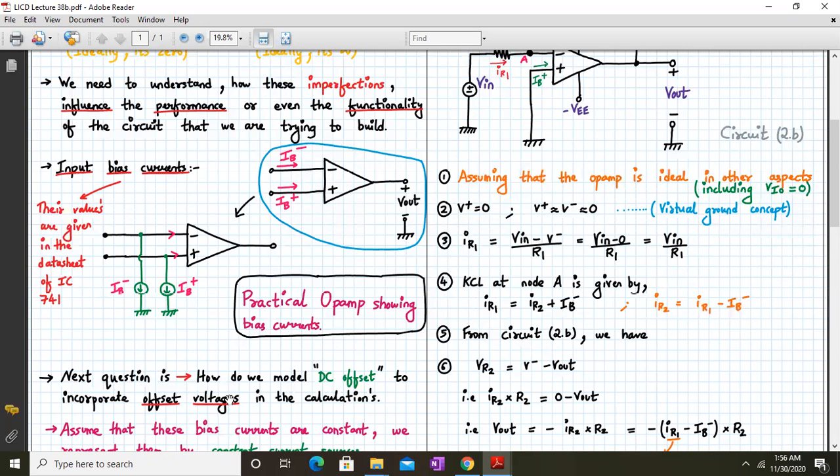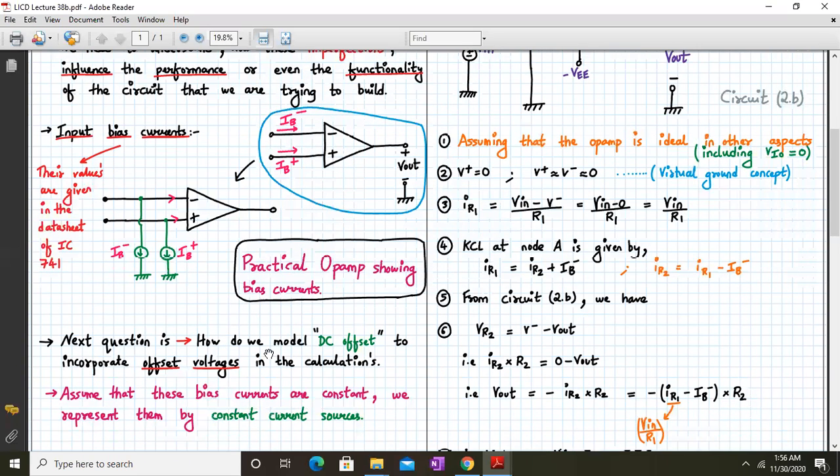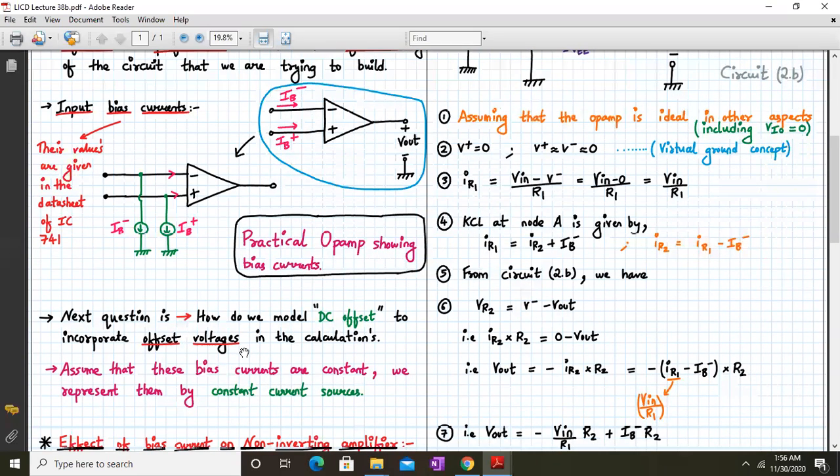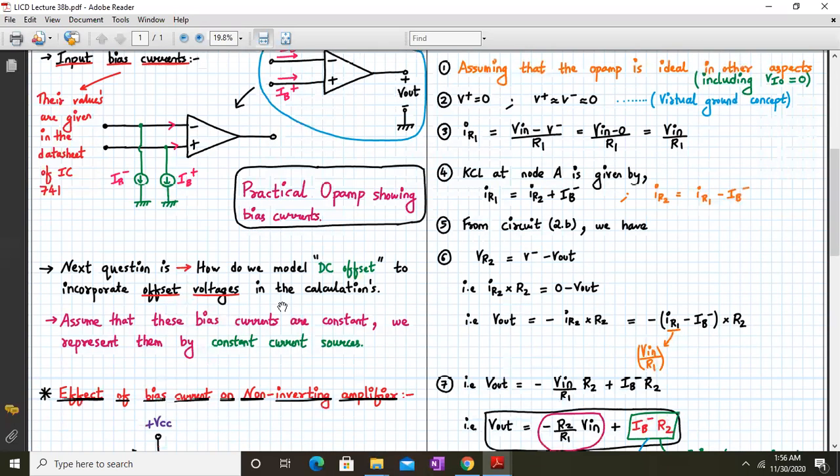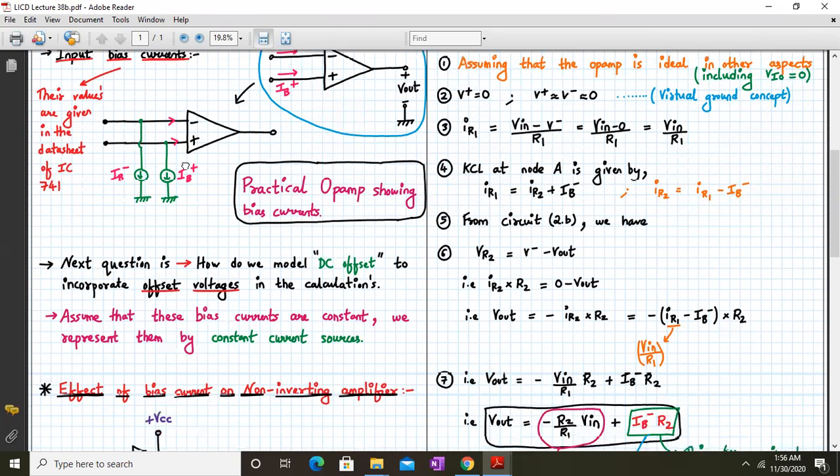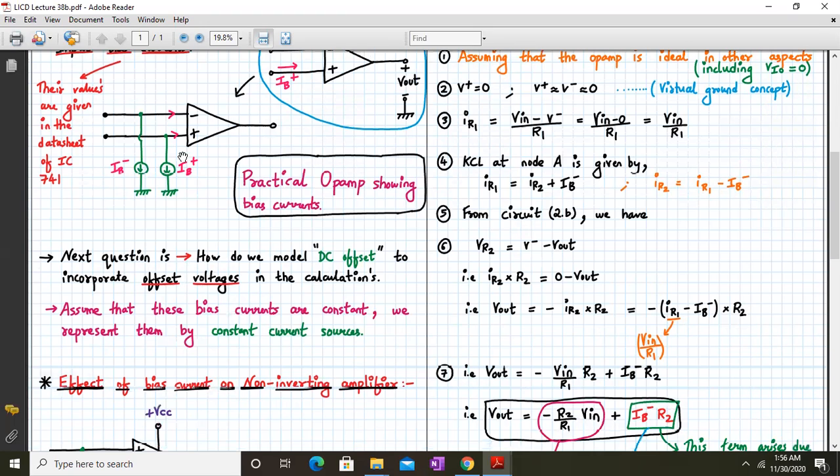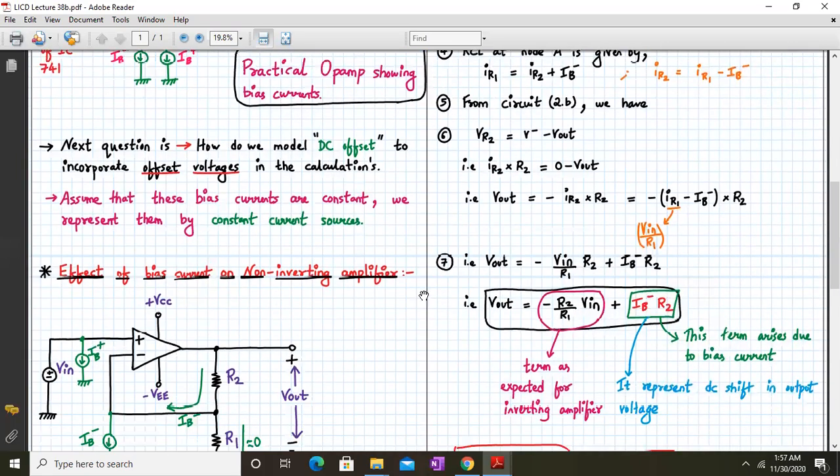So this is the practical op-amp showing the bias currents. Now the question will be how do we model the bias currents in order to incorporate its effects in the calculations? So let us assume that these bias currents are constant. Therefore, we represent them by a constant current source.